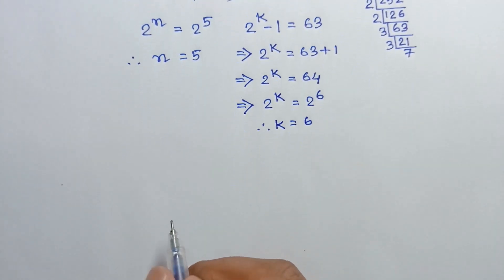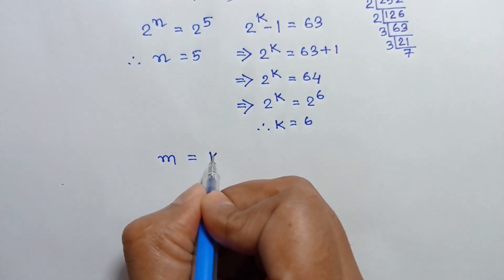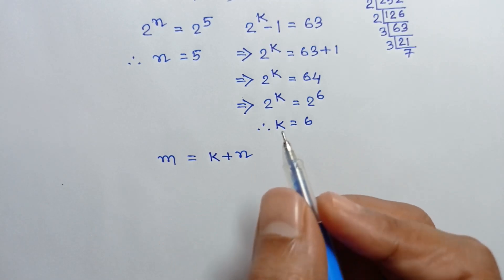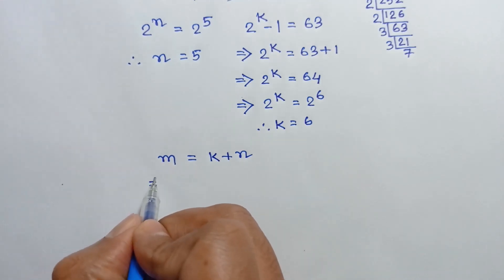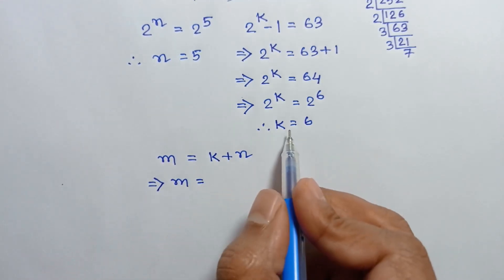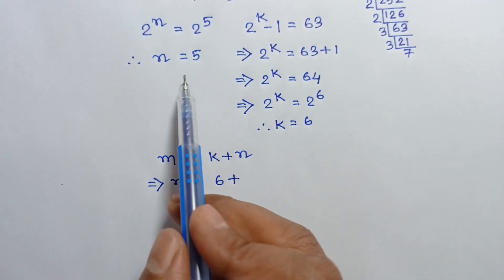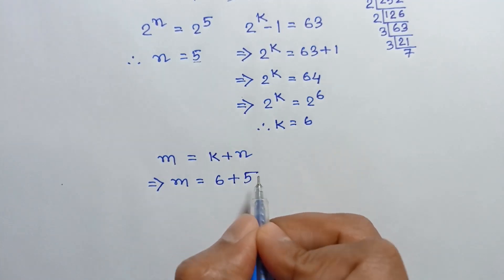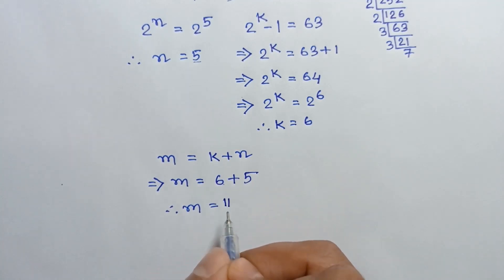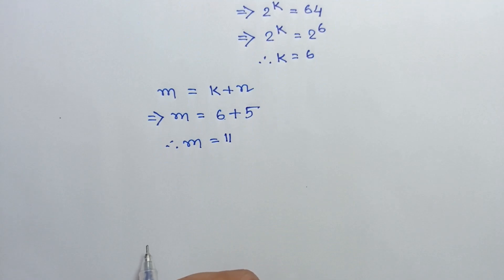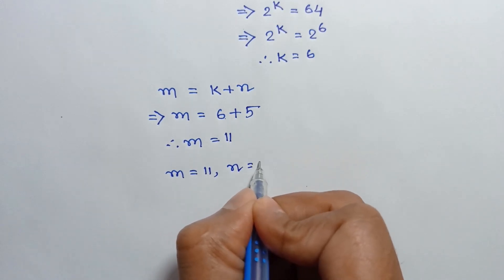Now, from equation 1, we have m is equal to k plus n. Substituting the values of k and n: m equals 6 plus 5, so m is equal to 11.